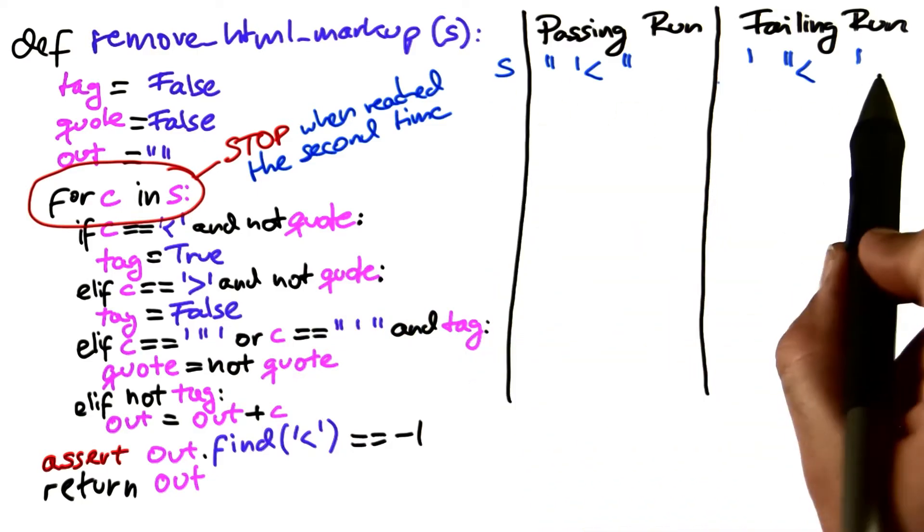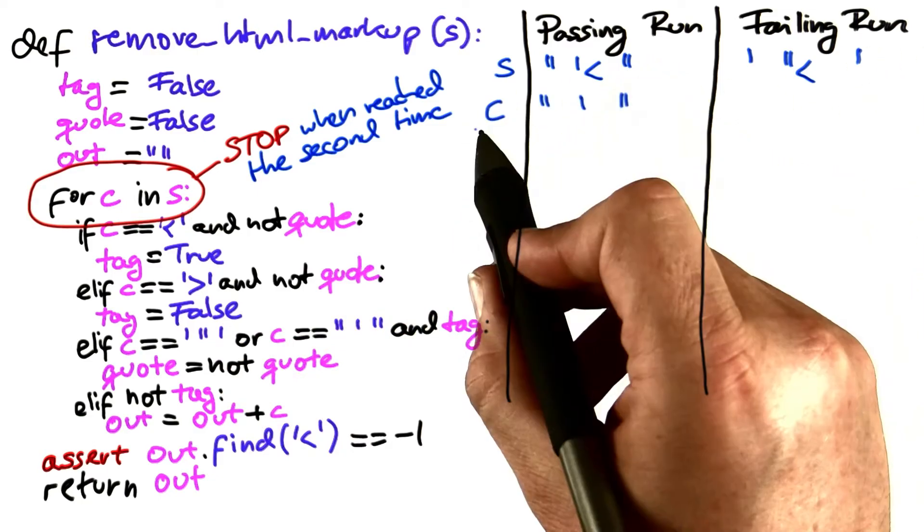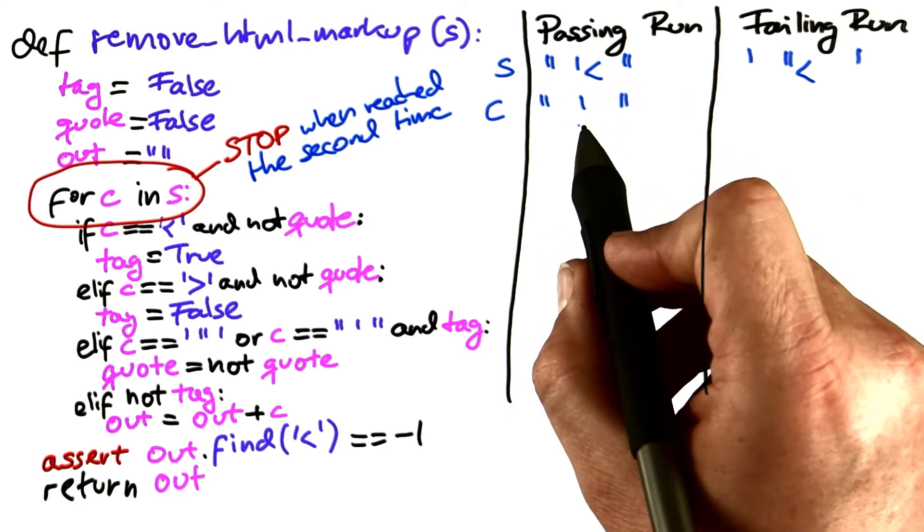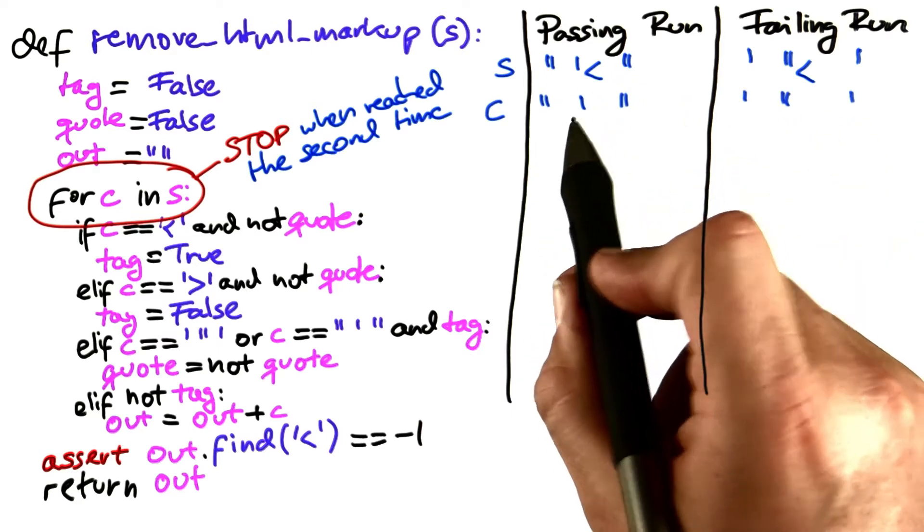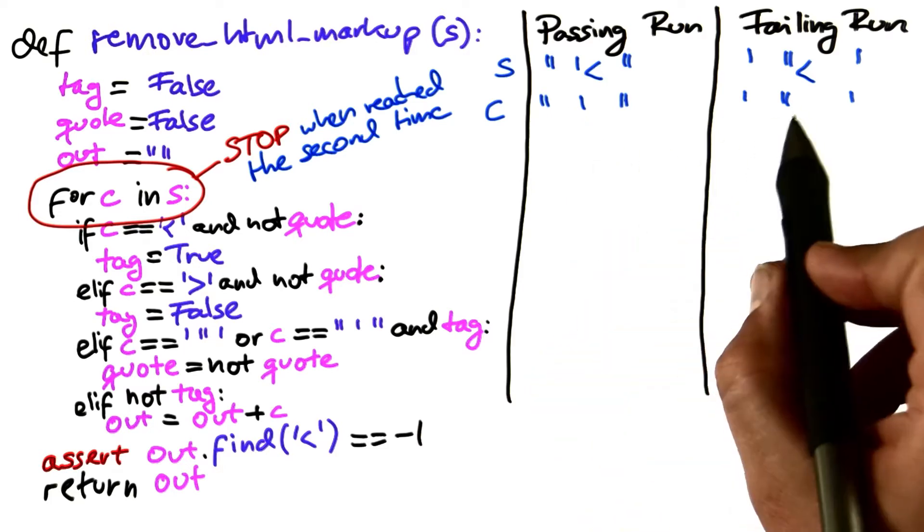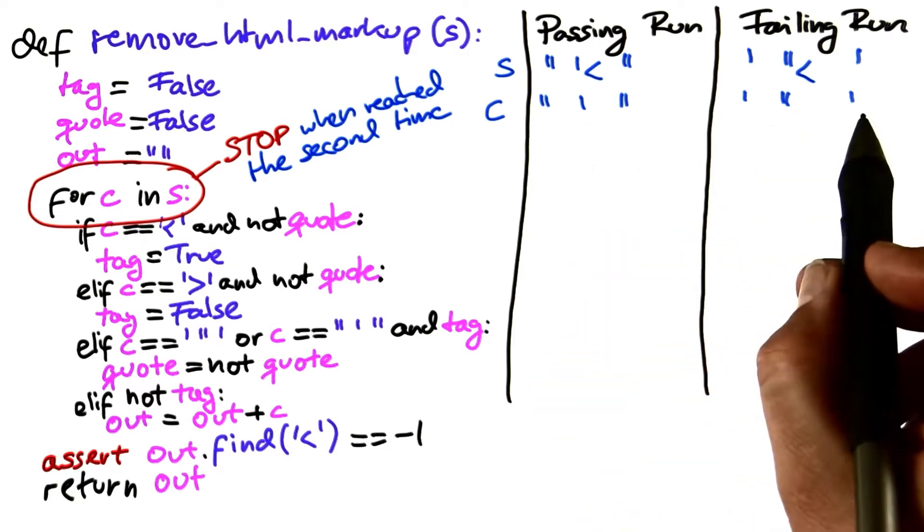The variable s stays unchanged at this point. The character c is still the first character being processed, which is different. In the passing run, it's a single quote. In the failing run, it's a double quote.